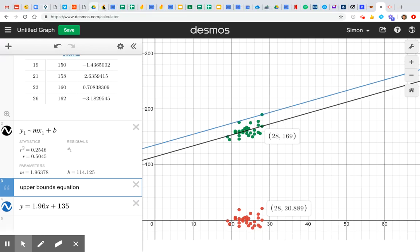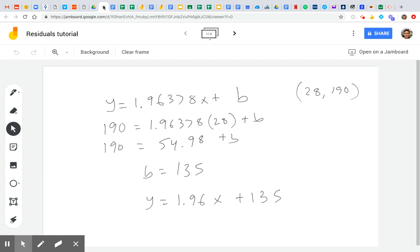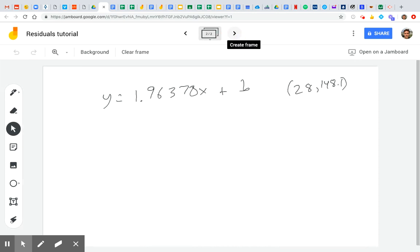So I'll go back over to Jamboard here. And so we're looking for this equation now. So I plug in 148.1 equals 1.96378 times 28 plus B.